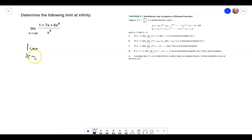So we have the limit as x approaches infinity. And we're going to have 1 divided by x to the fourth plus 7x divided by x to the fourth plus 6x divided by x to the fourth, all over x to the fourth divided by x to the fourth.